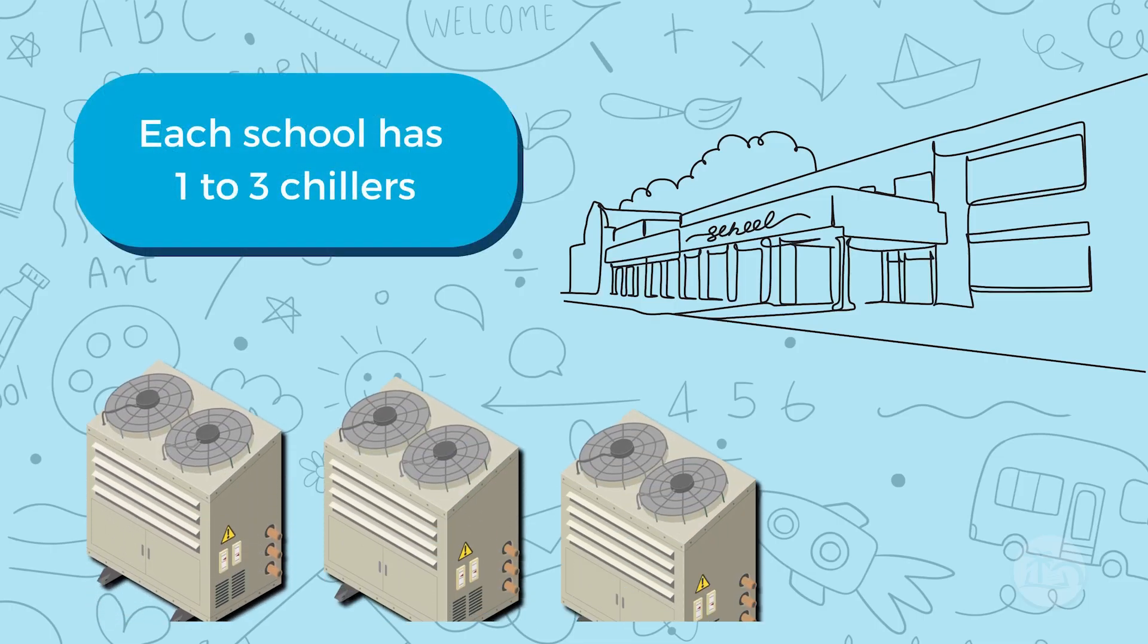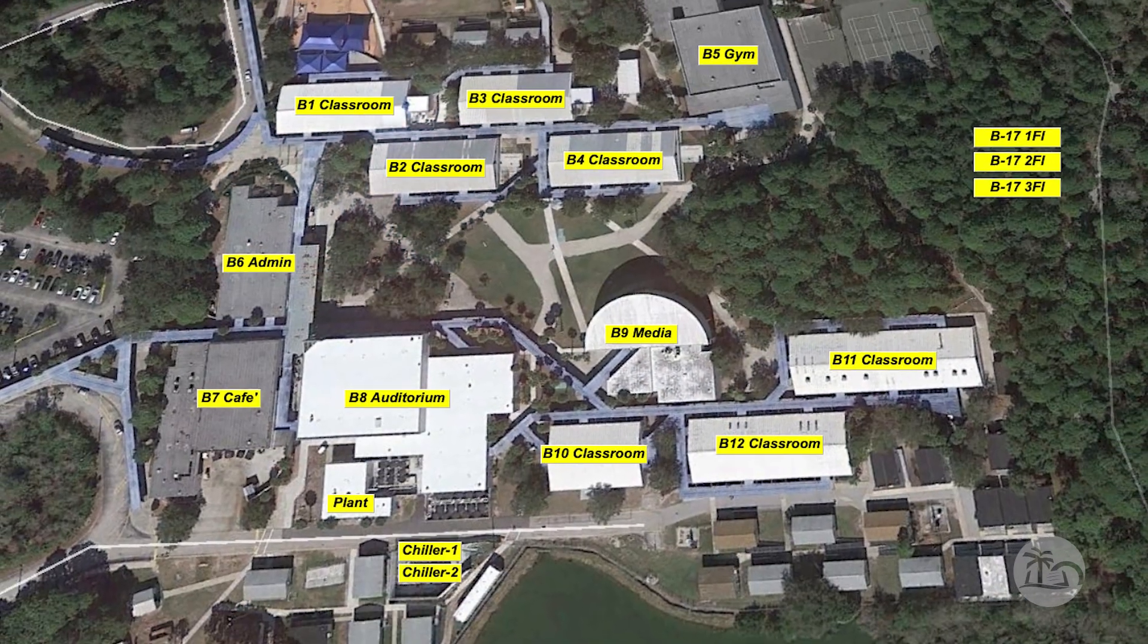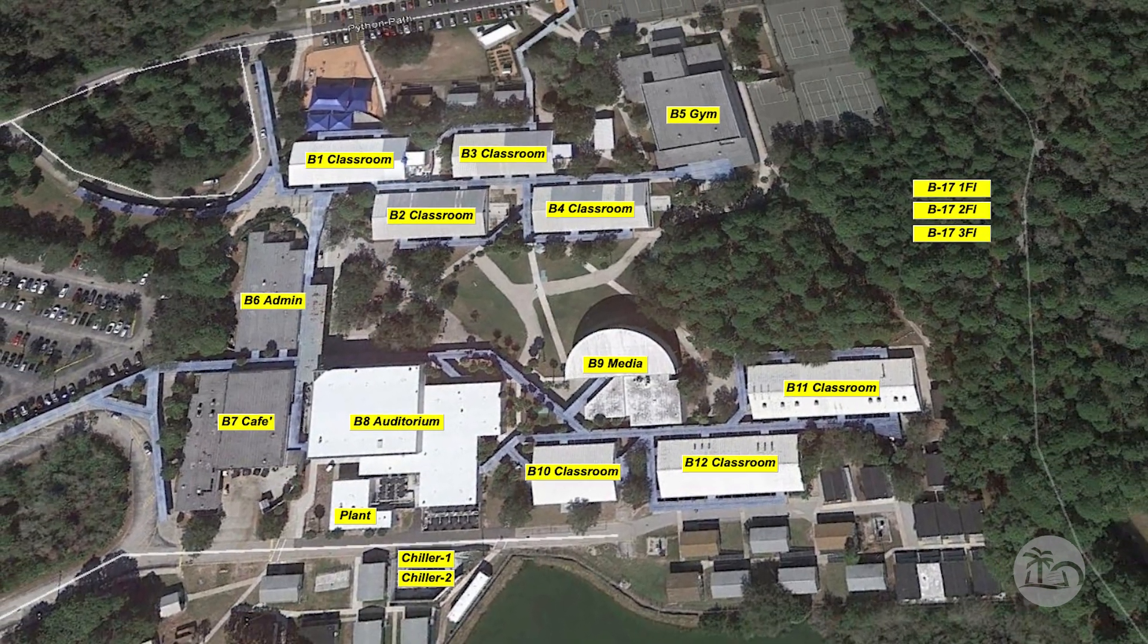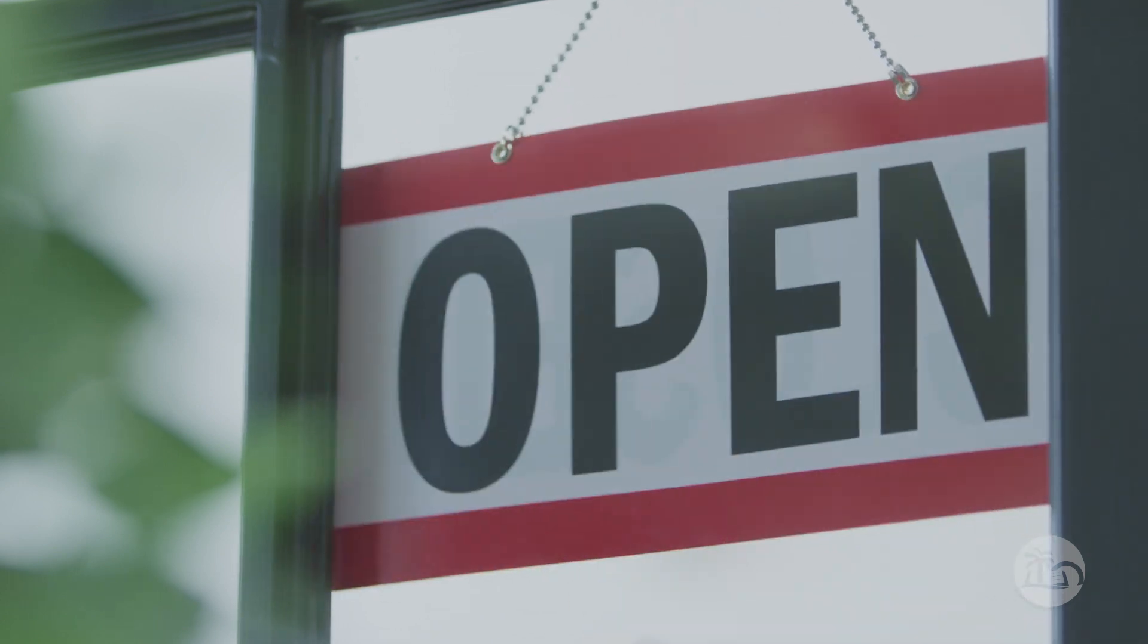All the schools in the district have one to three chillers depending on the size of the school and out of that number the majority of these chillers are working in conjunction with ice plants in order to not have to operate during peak times. Peak time is when like most of industry is running for manufacturing and things like that.